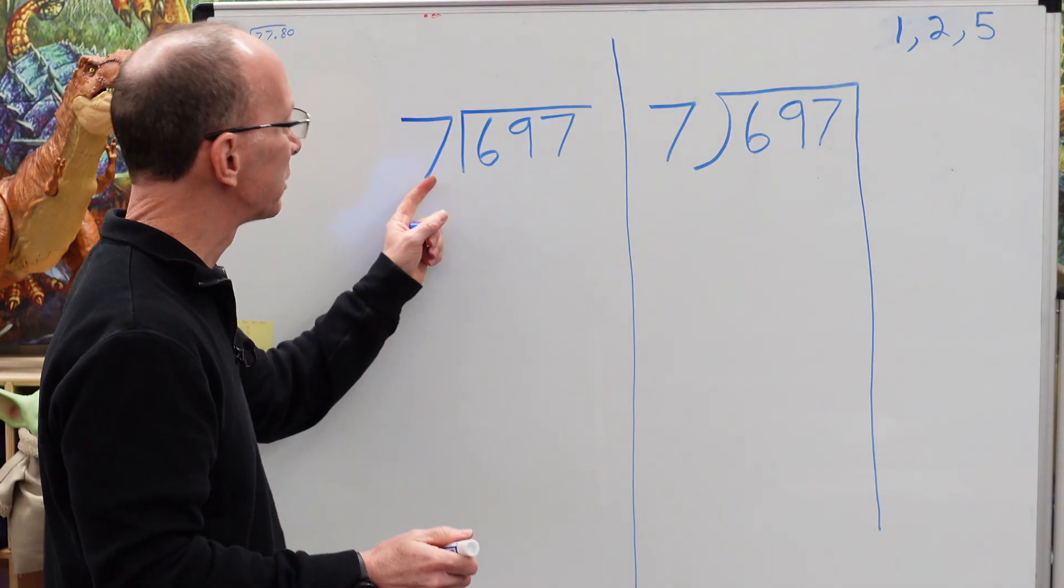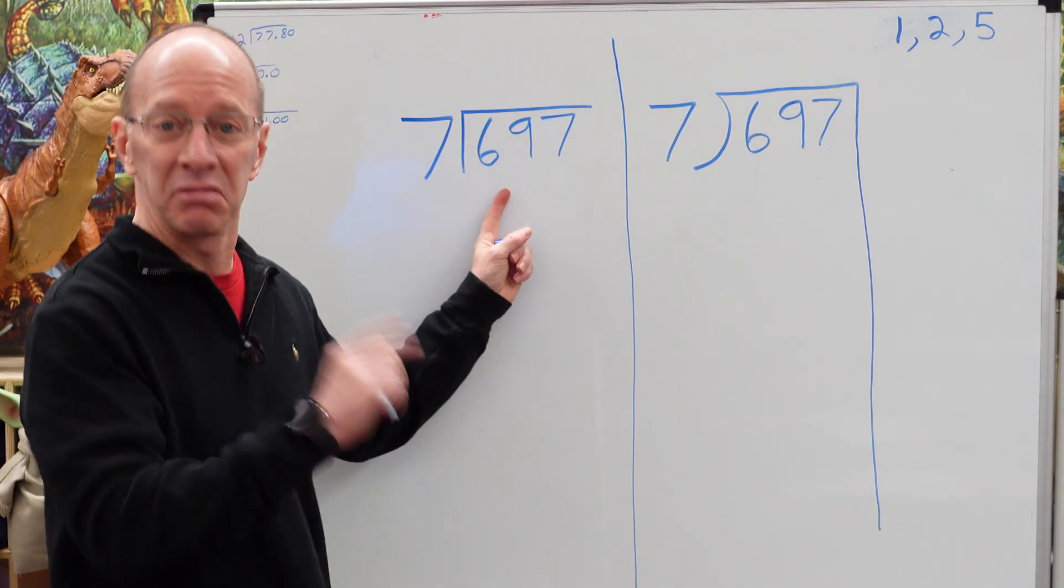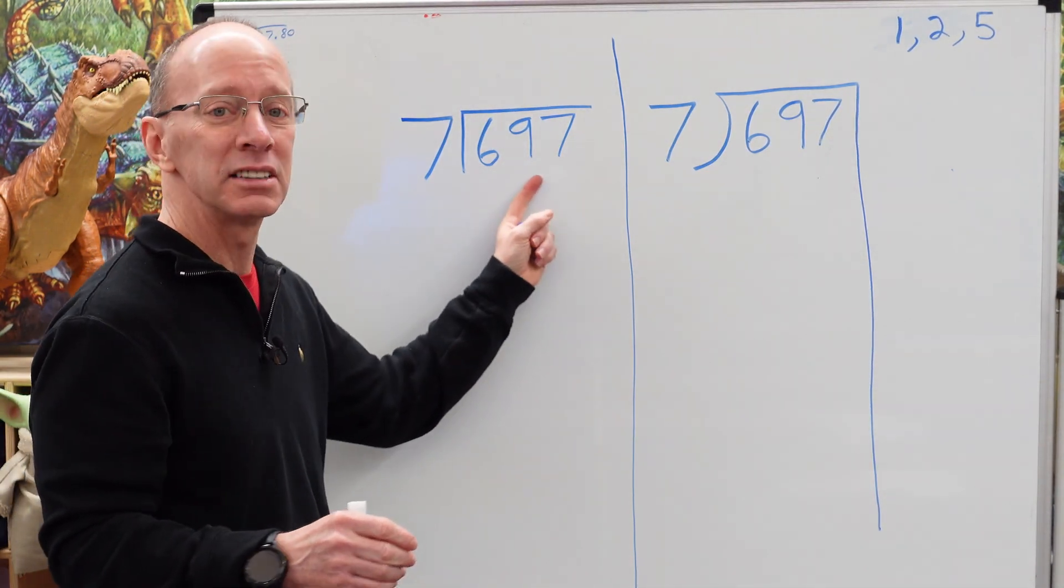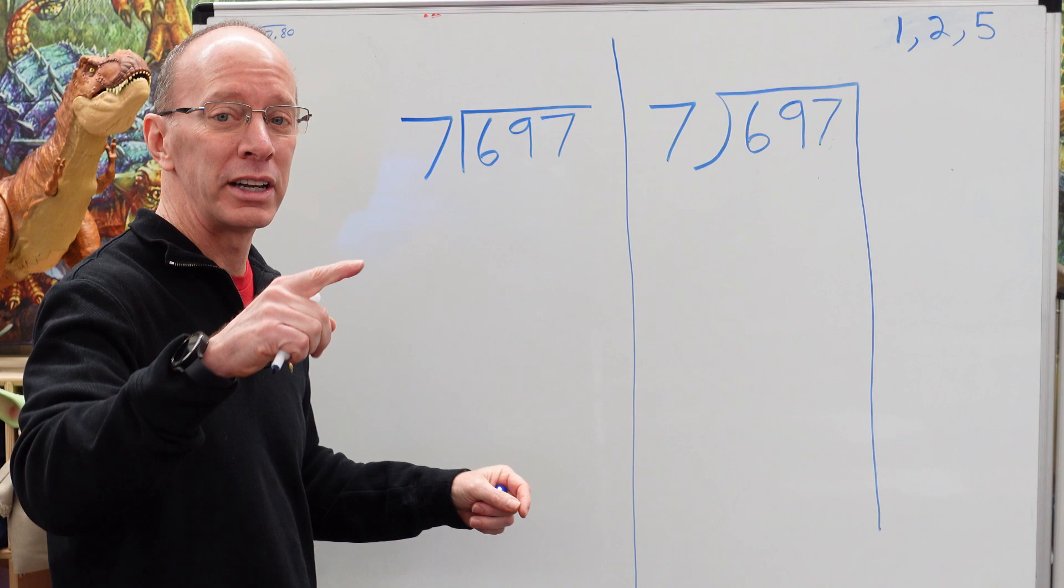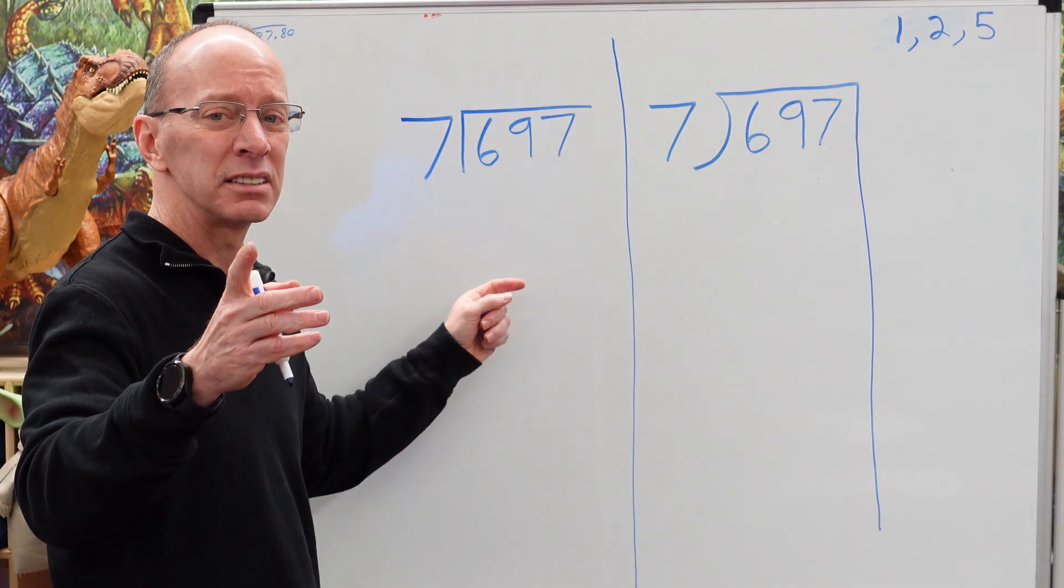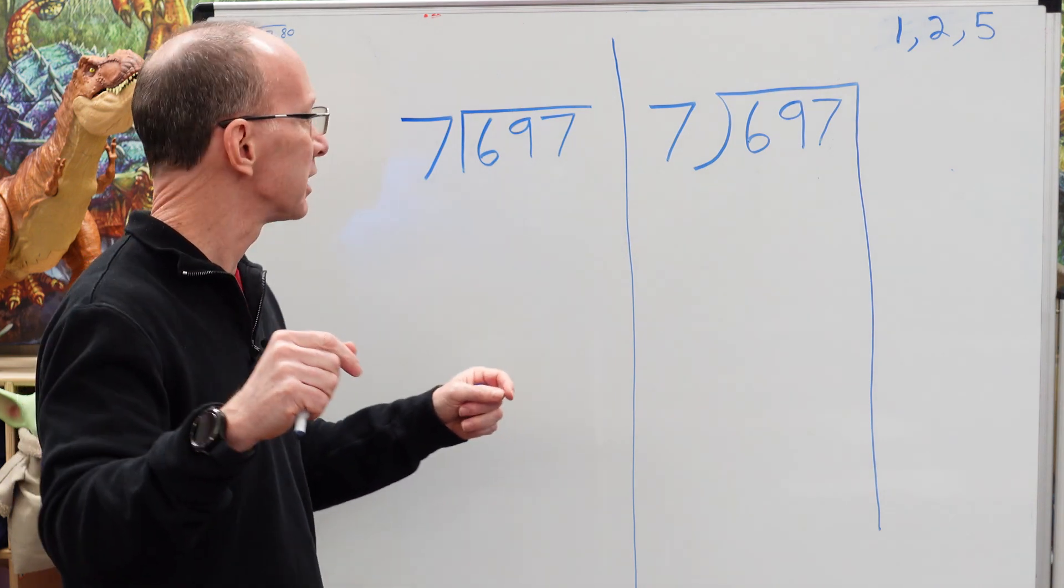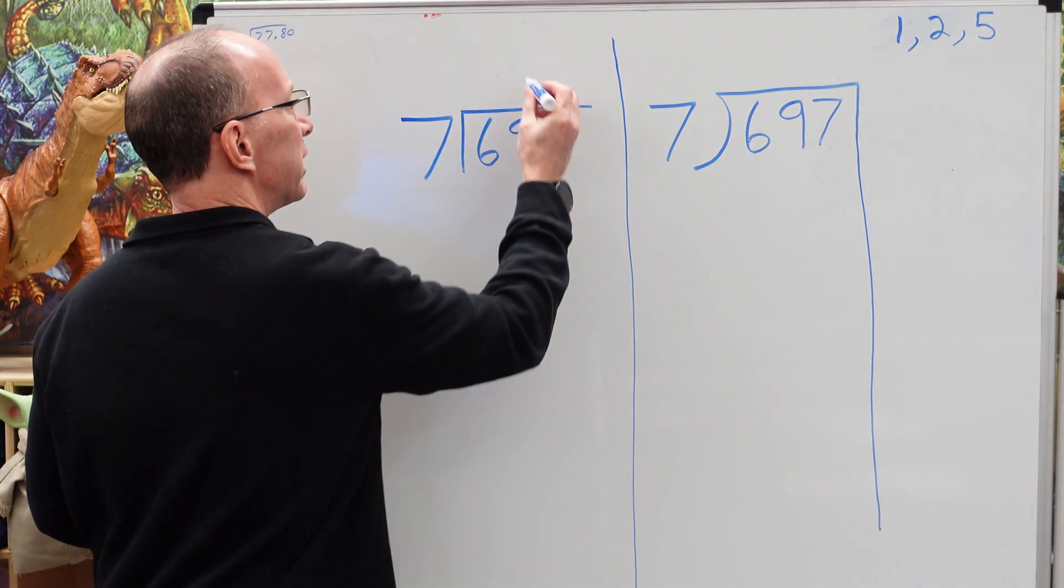Alright, how many times can I put seven into six? Can't do it. So then you have to move over to the next number. Seven goes into 69. Let me see, seven times seven is 49. Let's move it up. Seven times 10 is 70. Bring it down. Seven times nine is 63. I think we're going to stick there.